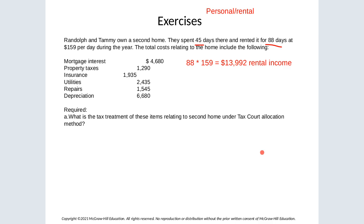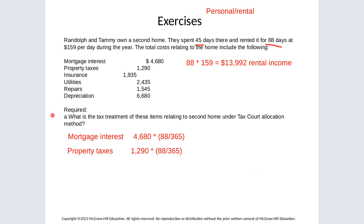We need to allocate expenses using the Tax Court method. For mortgage interest and property taxes, we use the ratio of rental days over 365. Mortgage interest of $4,680 is multiplied by 88/365. Property taxes of $1,290 are also multiplied by 88/365. All other expenses use the ratio 88 divided by total days used (88 rental plus 45 personal = 133 total days).